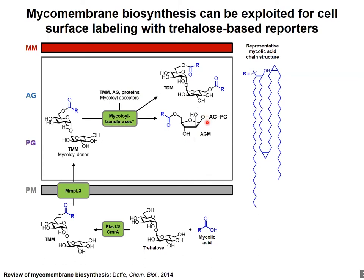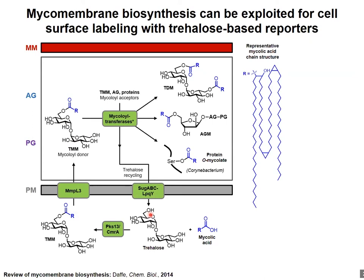It's also been recently discovered that in corynibacteria, which are closely related to mycobacteria, proteins can also be mycoloylated through this process at serine residues, and those proteins get embedded into the outer membrane. Trehalose also gets released from the TMM donor and recycled back into the cell. These pathways are essential for mycobacterial viability and are conserved across all mycobacterial organisms, providing opportunities for mycobacteria-specific chemical reporter probe development.